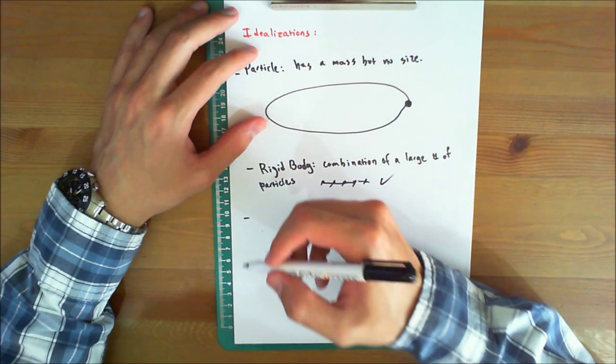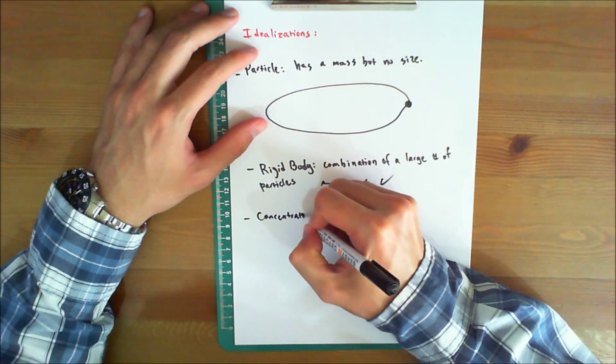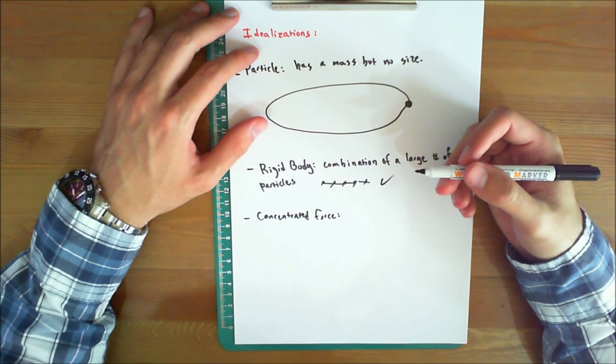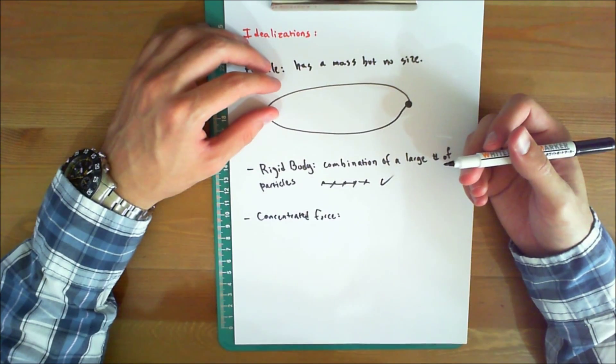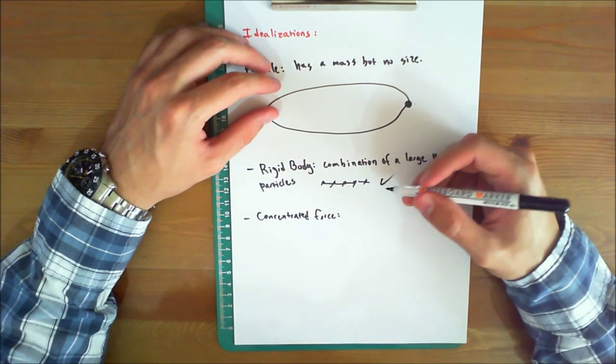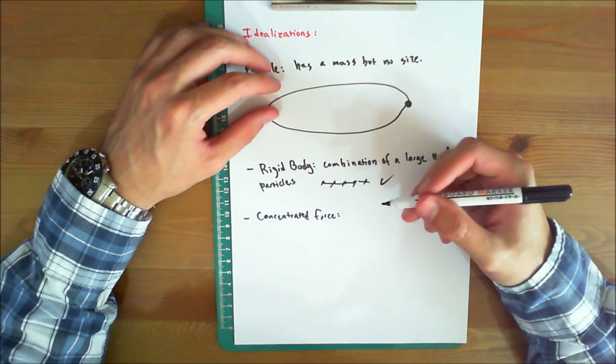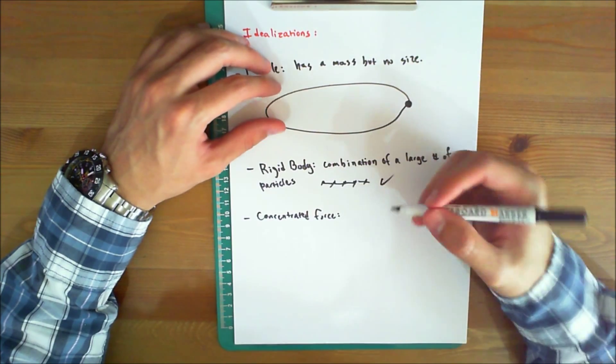The next idealization is the concentrated force. Now, a concentrated force represents the effect of a loading, which is assumed to act at a point on the body. We can represent a load by a concentrated force, provided the area over which the load is applied